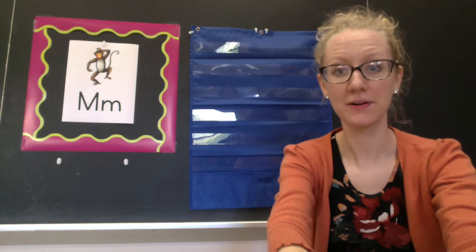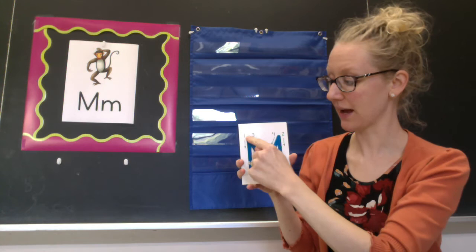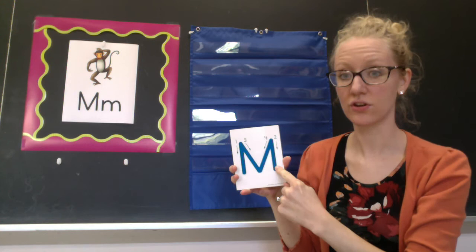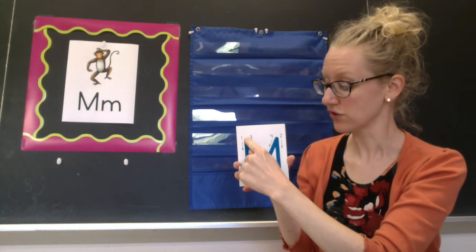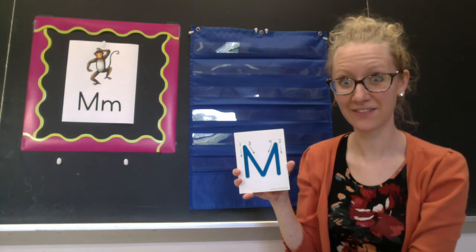To make a capital M, you start at the top. You come straight line down and straight back up, slant down to the bottom, slant back up to the top, and straight back down. You can do all of this without picking up your pencil. Watch one more time. Straight down and up, slant down, slant up, straight down. A lot of lines, but you can do it.